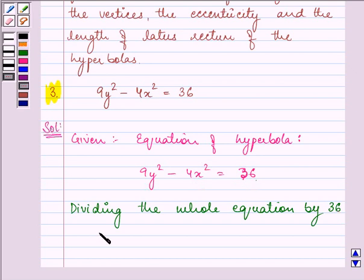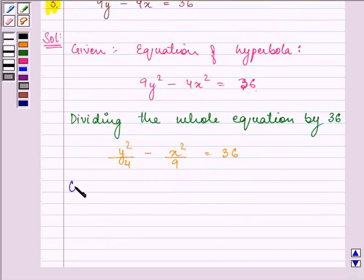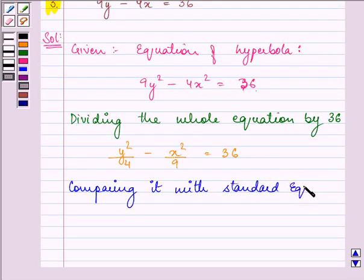We have the answer as y²/4 - x²/9 = 1. Now, we will be comparing it with standard equation known to us, that is y²/a² - x²/b² = 1.